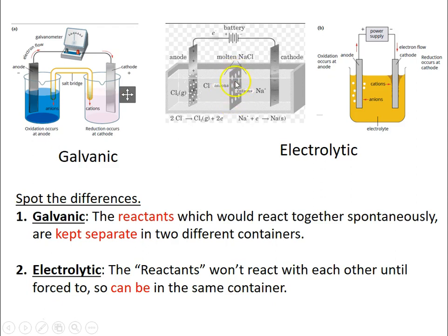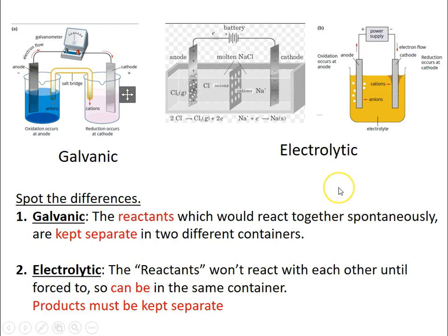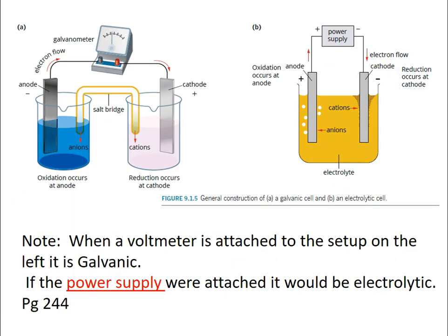For electrolytic cells you don't have to worry about keeping the reactants separate because they're not going to react spontaneously — you have to force the reaction to happen. They can be in the same container, but sometimes we have to put a polymer membrane or something to separate the two sides so that the products won't react. The products must be kept separate because they would spontaneously react with each other. A power supply or a positive anode are clear indications that it's electrolytic rather than galvanic.